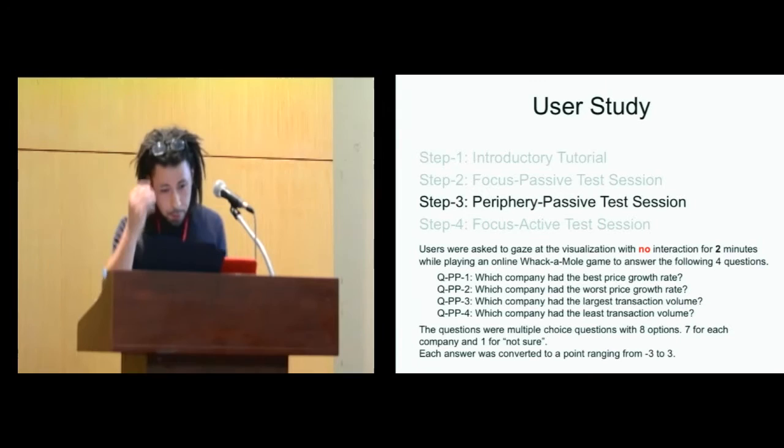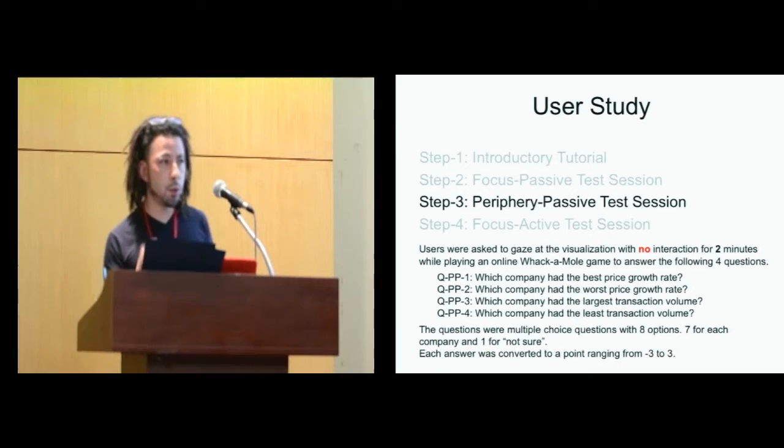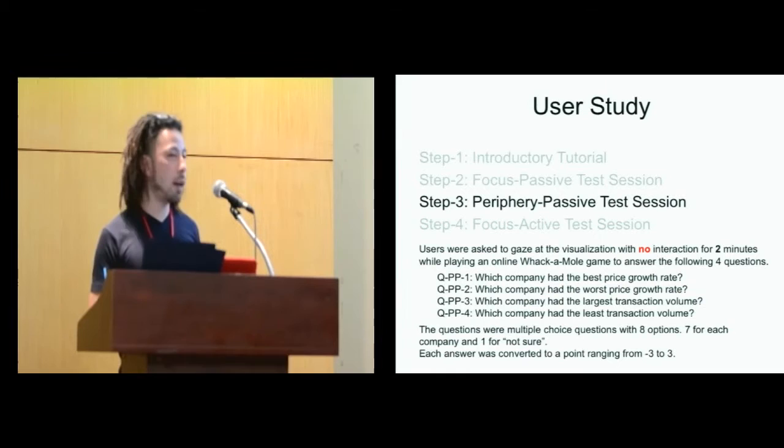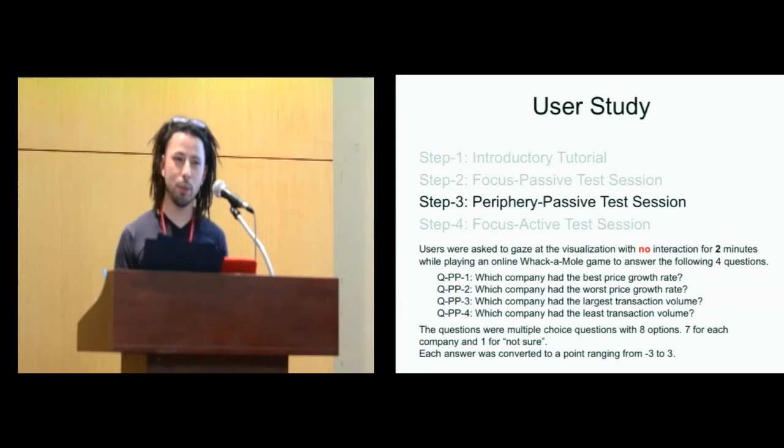For the peripherally passive test session, users were asked pretty much to do the same thing, but they were allowed to watch the visualization for two minutes, a little bit longer, while playing a game of whack-a-mole. So that's supposed to be their primary objective, and they're supposed to score highest as they can. While doing that, they should be receiving information from the visualization in the periphery. Then we asked the same exact question and scored it in the same fashion.